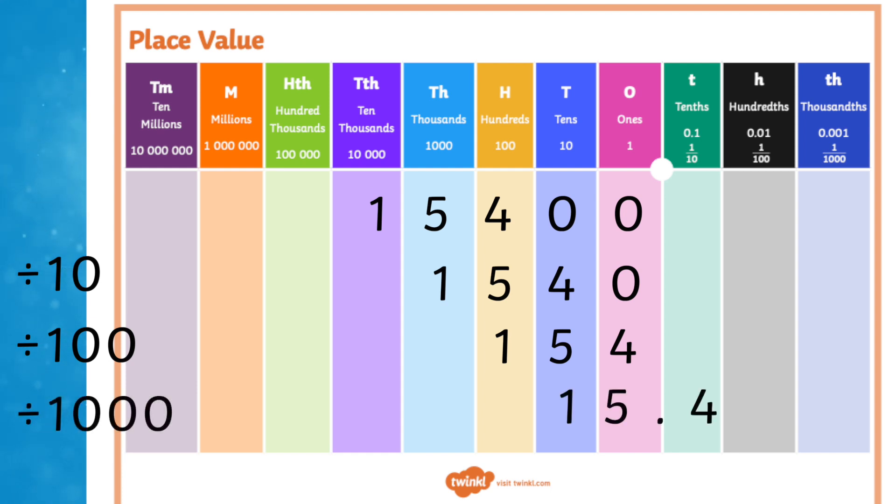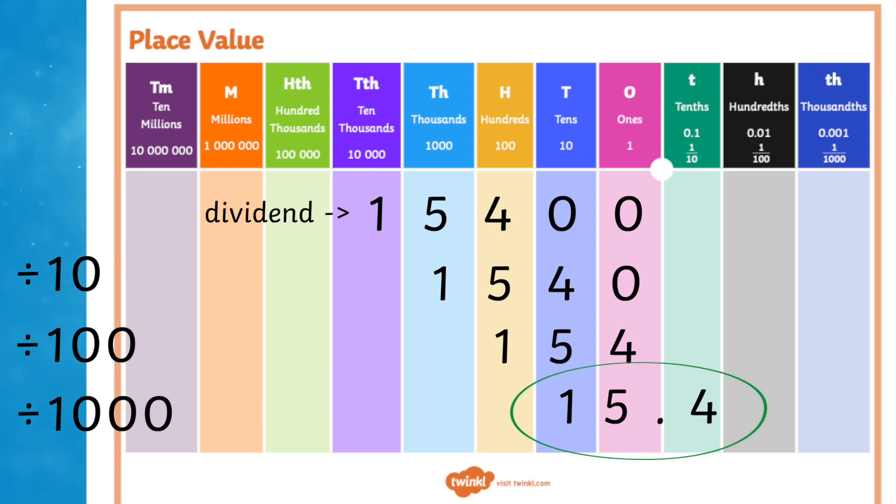As you can see, depending on the size of your dividend — the number you are dividing — your answer may be a decimal number. Being able to multiply and divide swiftly by multiples of 10 is a really important skill for children to develop during Key Stage 2.